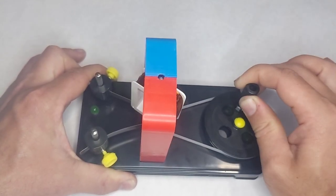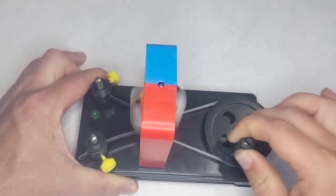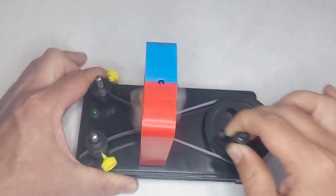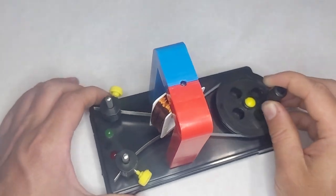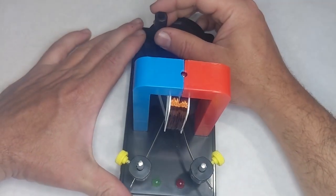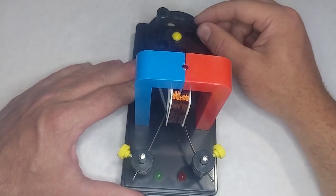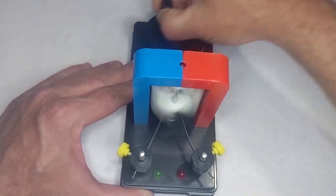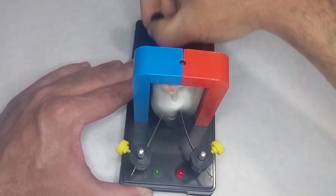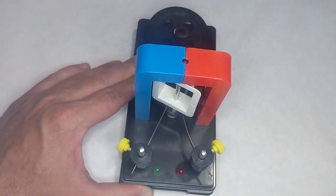Once you get it spinning, you start to light the LED. This generator is wired so that depending on which way you turn it, different LEDs light up. So if I go this way I can get the green to flash, and if I go this way red will flash.